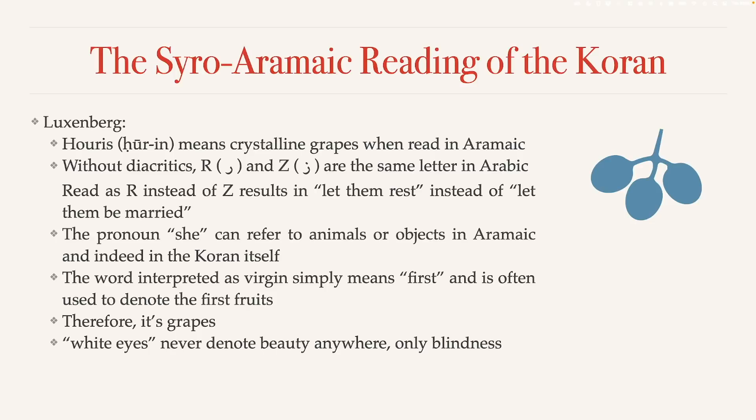The pronoun 'she' can refer to animals or objects in Aramaic, and indeed in the Quran itself there are instances where this pronoun addresses something other than a woman. For example, in the Quran there's a verse talking about Pharaoh's cows, who are also addressed as 'she' — something possible in Aramaic but not in modern Arabic. Going to the larger context, the word interpreted as 'virgin' simply means 'first,' and is often used to denote the first fruits.